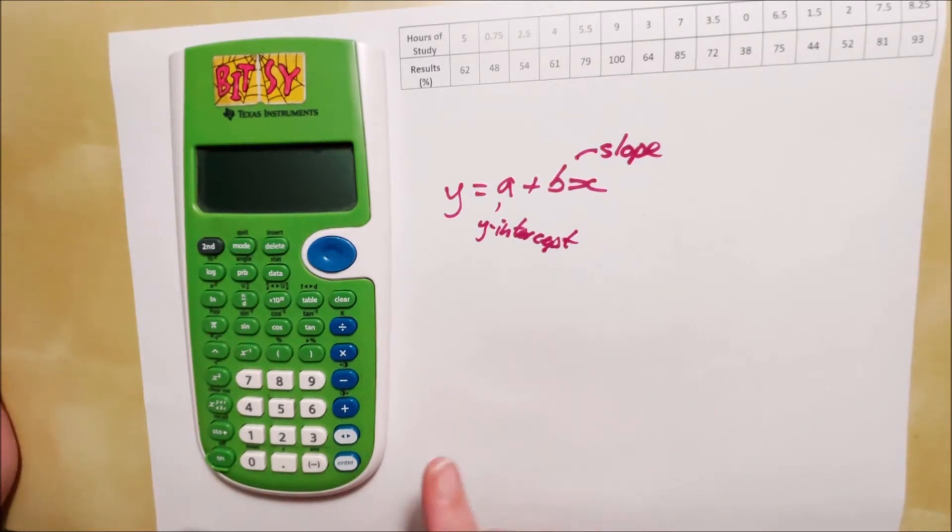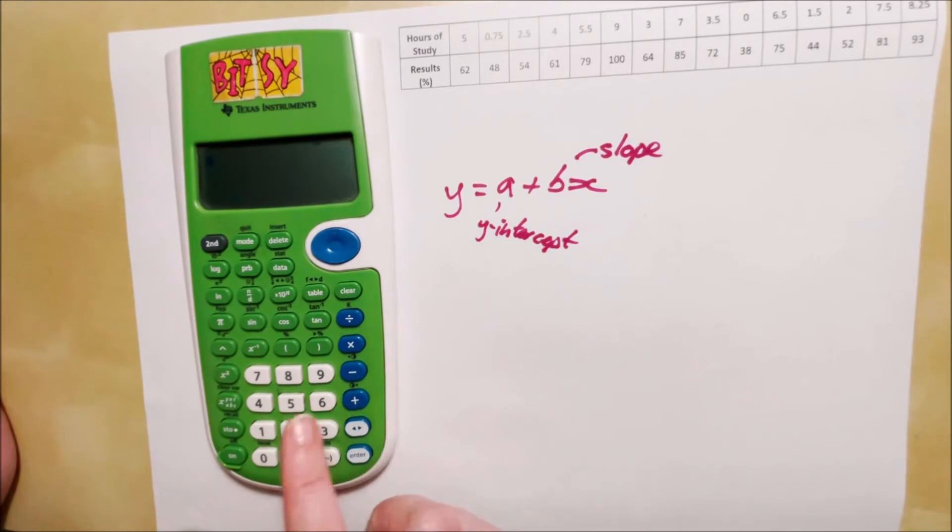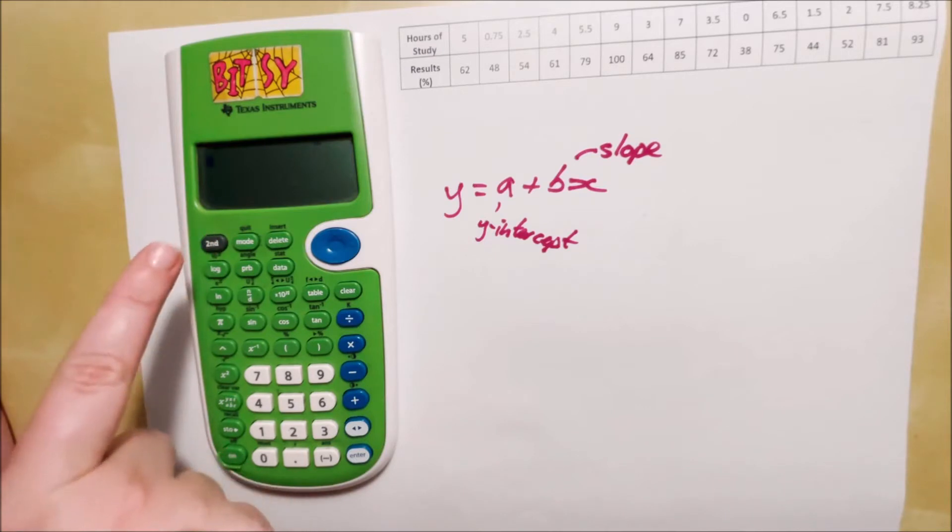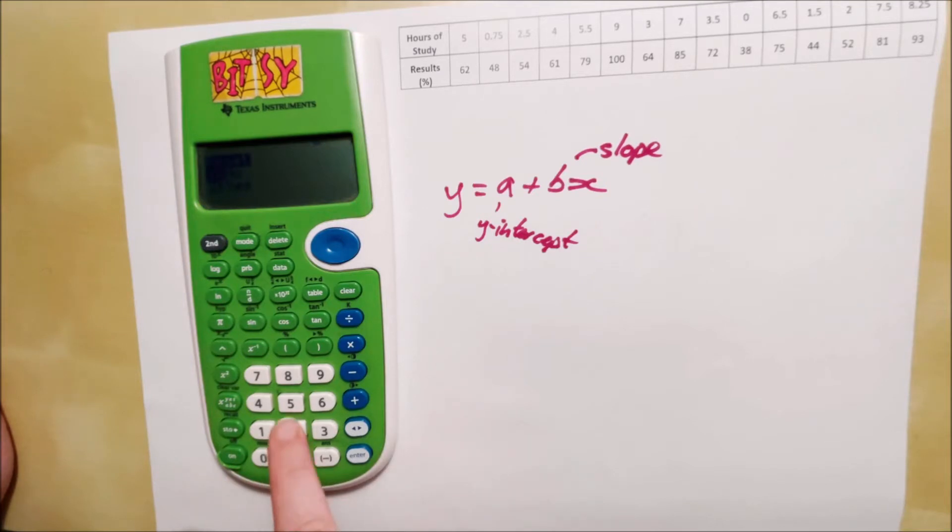Okay, so the first step you need is to clear your calculator's memory. There's a few ways you can do that. You can hit second function and then the zero button, which you can see says reset above it. Hit that button and then hit number two for yes, and it will clear your memory.